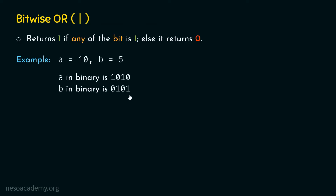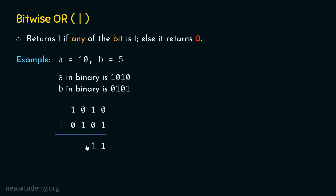We need to perform the bitwise OR operation between these two values, using the pipe symbol. 0 OR 1 gives us 1, because the bitwise OR operator returns 1 if any of the bits is 1. 1 OR 0 gives us 1. 0 OR 1 gives us 1 again. 1 OR 0 gives us 1. So we get 1111, which is equal to 15 in decimal. Therefore, 10 OR 5 gives us 15.